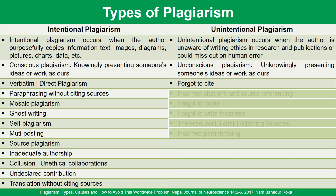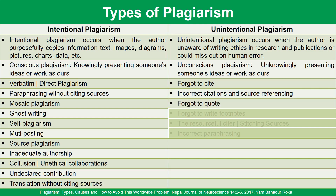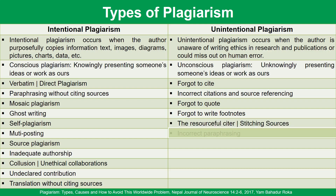As mentioned earlier, unintentional plagiarism occurs for several reasons, such as a lack of awareness and experience or human errors. Types of unintentional plagiarism include: forgetting to cite the sources or citing incorrectly, forgetting to quote the borrowed information, forgetting to write the footnotes, borrowing too much information from various sources and stitching them together, and performing incorrect paraphrasing.